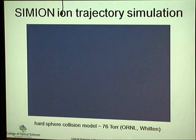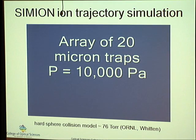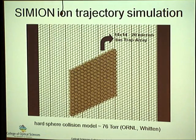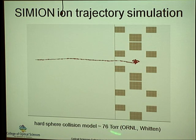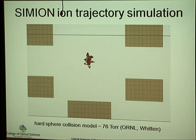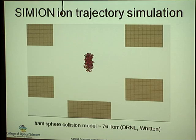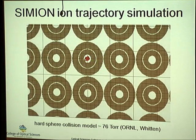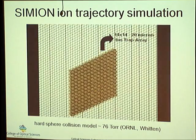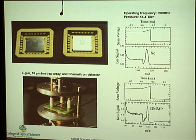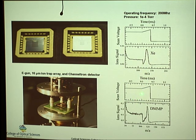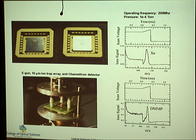Our experiments were done at fairly high vacuum, but in simulation we showed that at higher pressures — around 10^-4 torr — it is possible to trap some ions. An ion comes in from the top, decelerates, and gets trapped inside the array of ion traps. Since then, we've demonstrated even smaller ion traps, going from 40 microns down to 10 microns, and demonstrated trapping of xenon ions (atomic ions) and molecular ions including DMMP, which is a surrogate for explosives used in mass spectrometry testing.